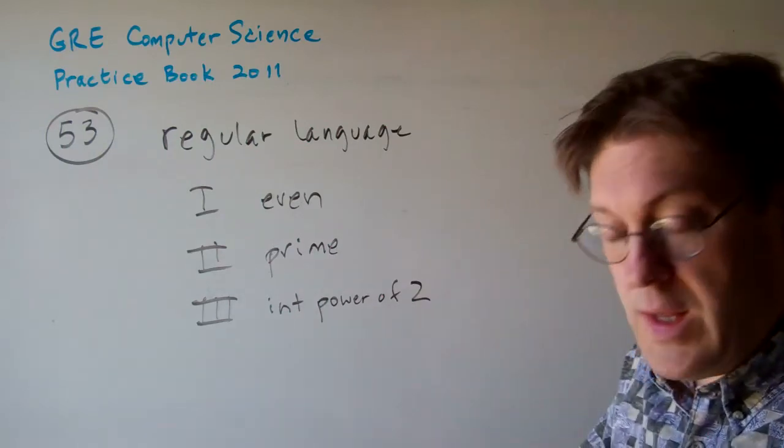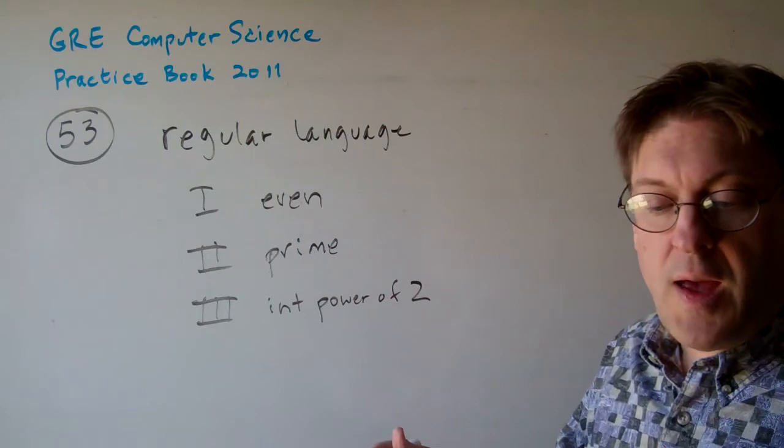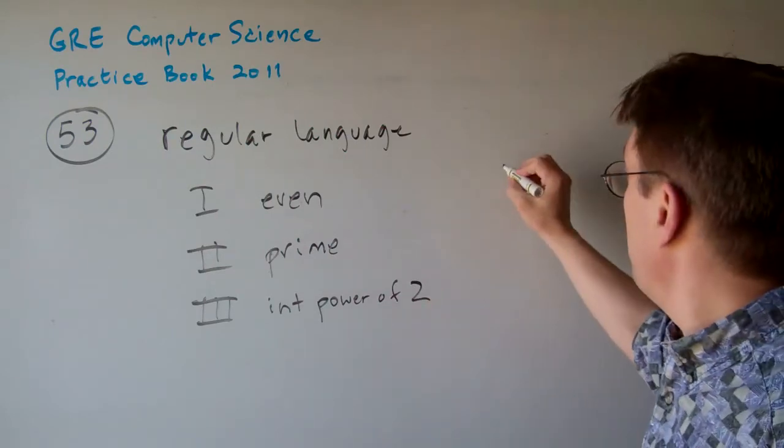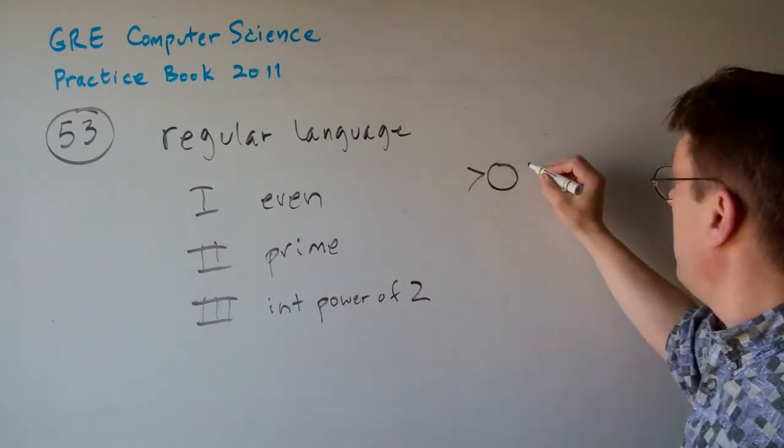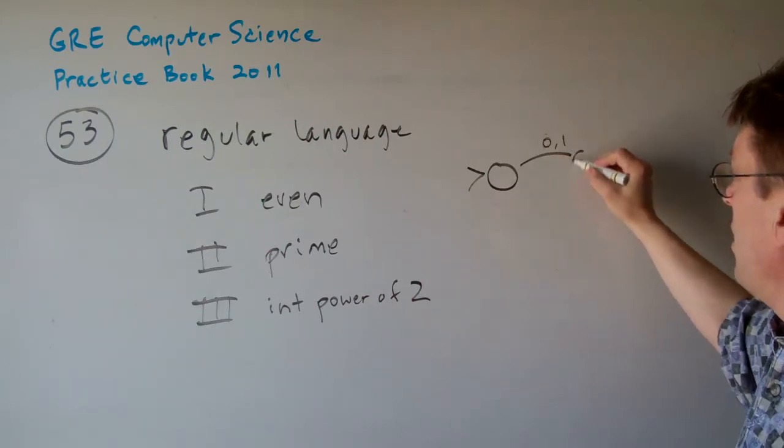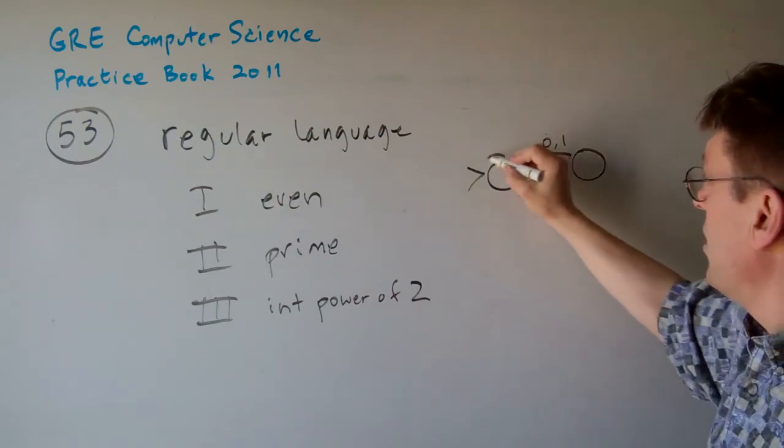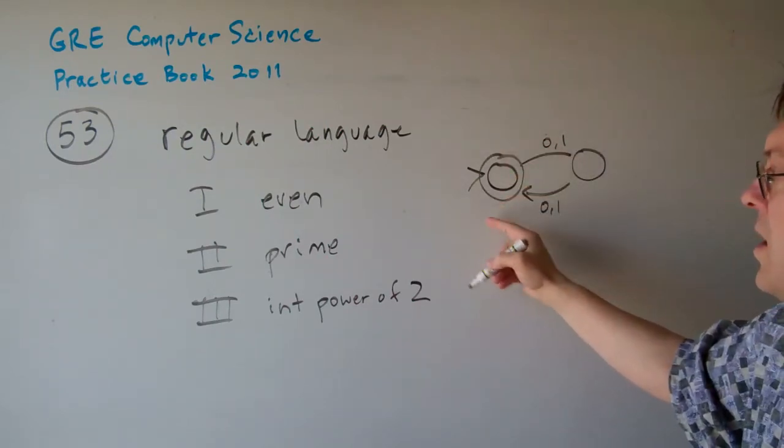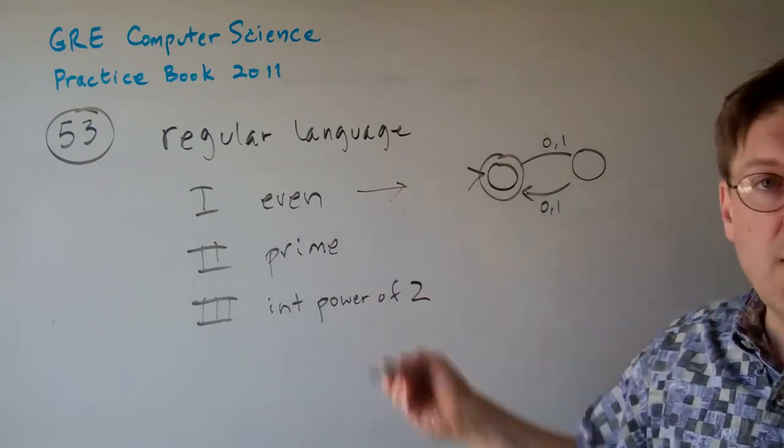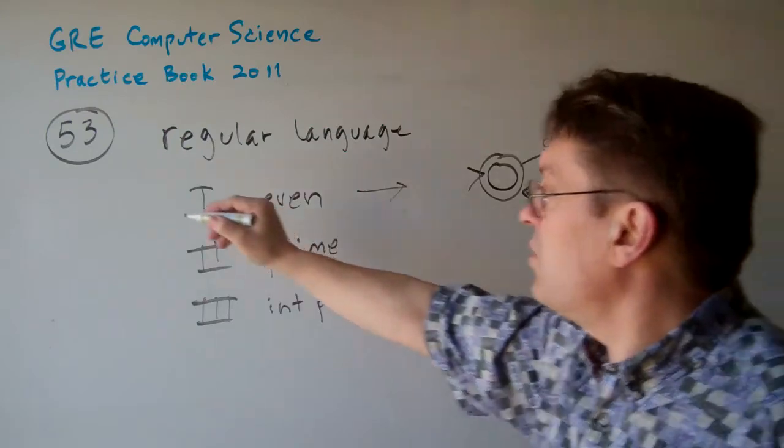Well, we can easily show a language over 01 that is even, right? So we can say that we've got a start state here. And if we go, let's just do 0 or 1 here, and then 0 or 1 back. The start state is the accepting state. There is your even finite state automaton. So we know for sure 1 is true.